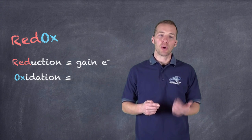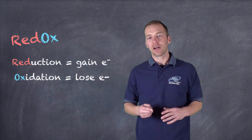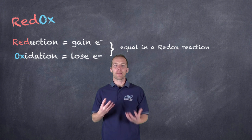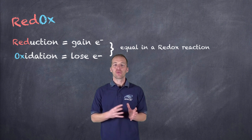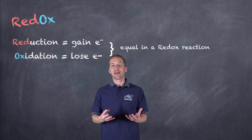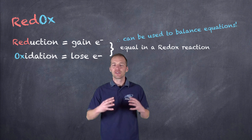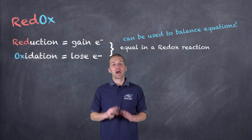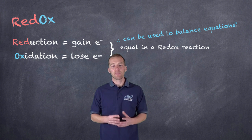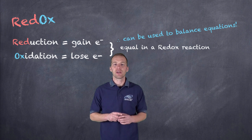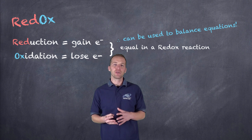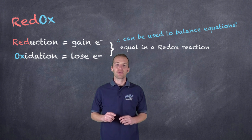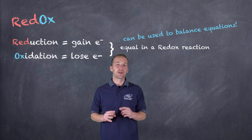Redox reactions are composed of a reduction and an oxidation half, which ultimately means we have an equal amount of electrons being lost or gained through the course of a reaction. If we know that, it allows us to balance the equations. We've already learned one way to use electrons to balance those equations, but if we understand how to assign oxidation numbers and what changes in oxidation numbers mean, we can use this to our advantage.